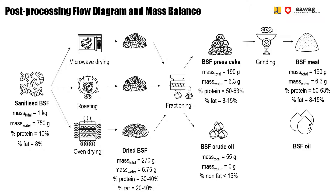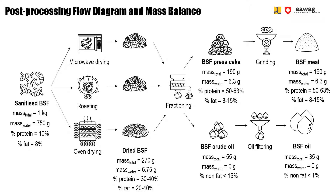Then, the smaller fraction from the screw press output is the BSF crude oil. It's called crude because some solids remain, resulting in a non-fat content of around 15%. In a further refining step, the oil can be purified to up to 99% fat content. However, in this last step there is a mass reduction of around 40% of the material that is lost in the refining step.